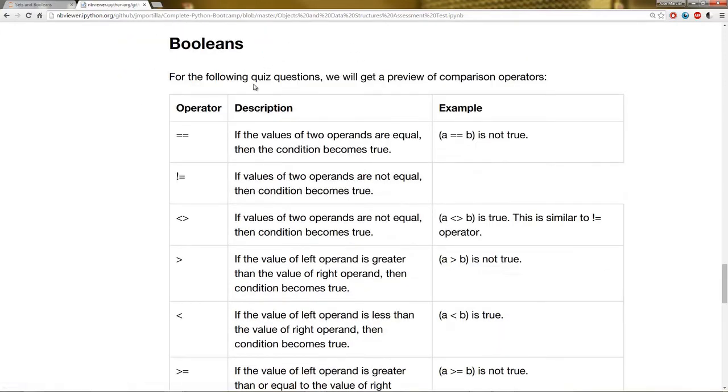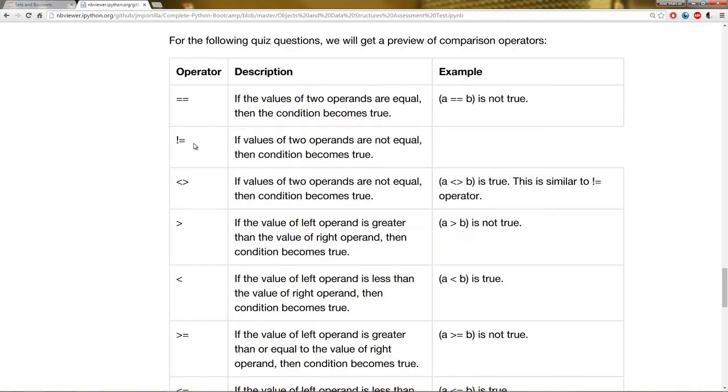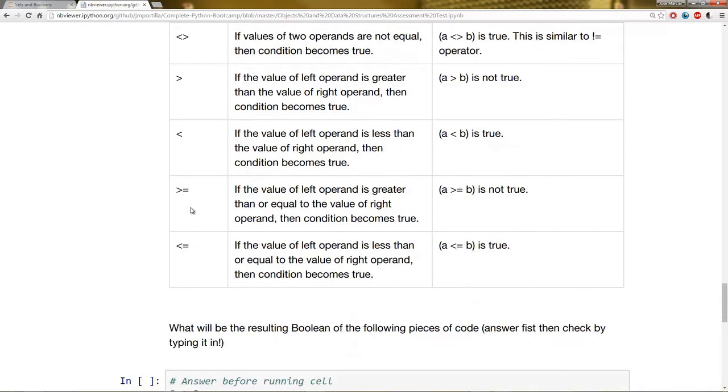And then Booleans. For the following quiz questions, I have a brief table here of all the comparison operations. There's an entire section devoted to comparison operators, but this will be a nice little preview for you to read. Basically we have the operator, the description of what it does, and a quick example. For instance, this equals equals is an example of checking if the two operands are equal. So A equals B in this case is not true, but A equal equals A would be true. And then the greater than, less than, et cetera.